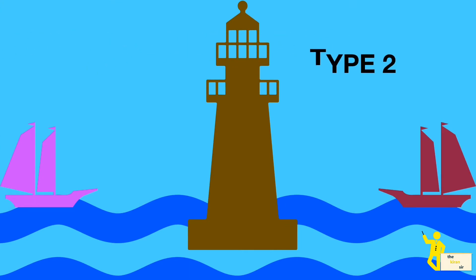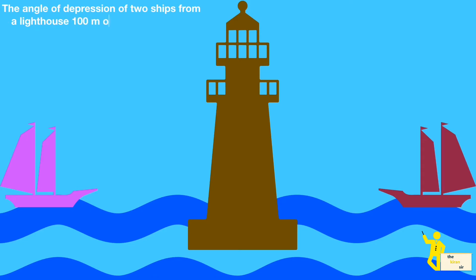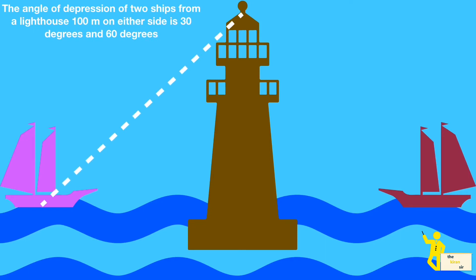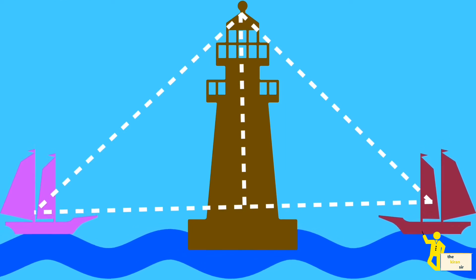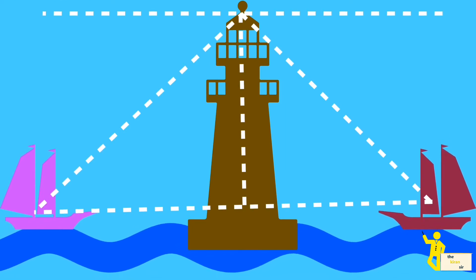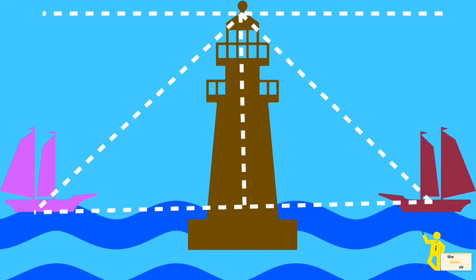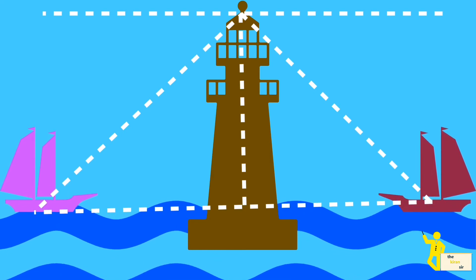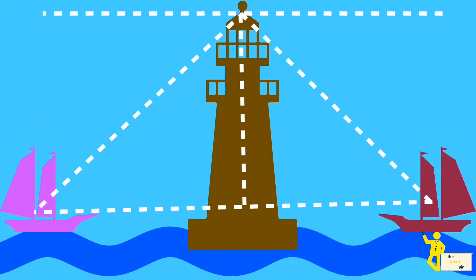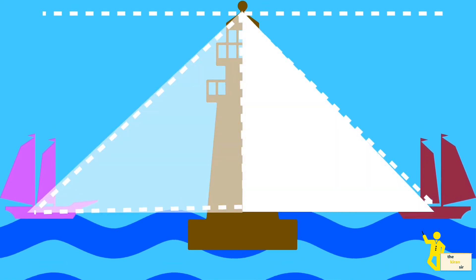The second type of question involves two triangles. The difficult questions are the ones where two triangles are involved. For example, a lighthouse stands between two ships on either side. The angle of depression to both ships is 30 degrees and 60 degrees, and the height of the tower is given. You have to solve both triangles one by one, find the base of each, and add them to find the distance between the two ships.